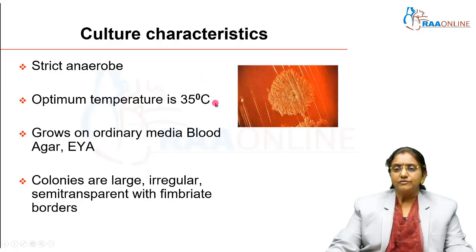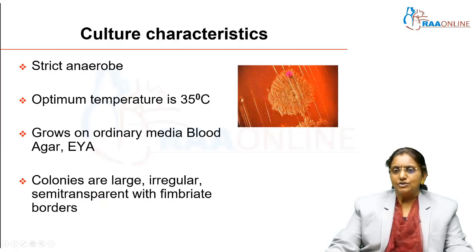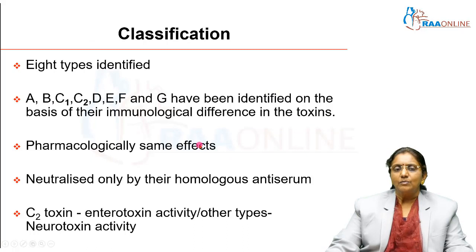The optimum temperature for its growth is 35 degrees centigrade, almost close to human body temperature. It grows well on blood agar — shown here is a photo of a blood agar plate or eggy oak agar — requiring some kind of enriched media. Incubated anaerobically, you get large, irregular, semi-transparent colonies with fimbriate borders. These irregular colonies with fimbriate borders and semi-transparent appearance are characteristic of Clostridium botulinum.